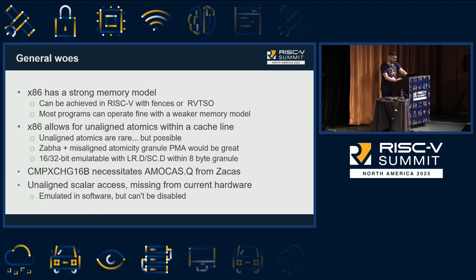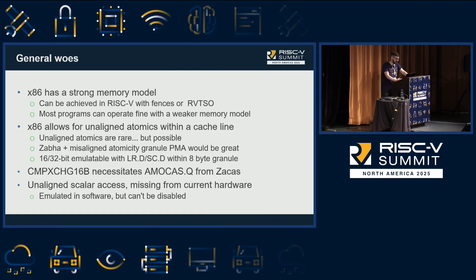Misaligned atomics are rare, especially in modern programs, but old programs and games do use them sometimes. There is also an instruction in x86 called compare-exchange 16B. To correctly emulate that without ruining performance, the right approach in my opinion is to use the AMO CAS instruction from the Zacas extension. What we currently do is a best-effort approach where we have a lock on every compare-exchange 16B — this isn't perfect because it's not atomic with regard to other memory accesses, but it is atomic with regard to other compare-exchanges.